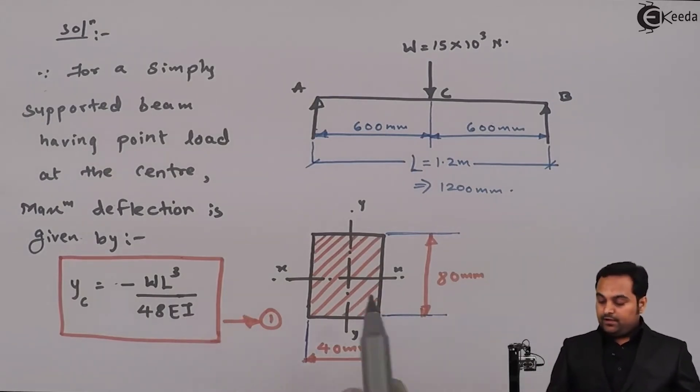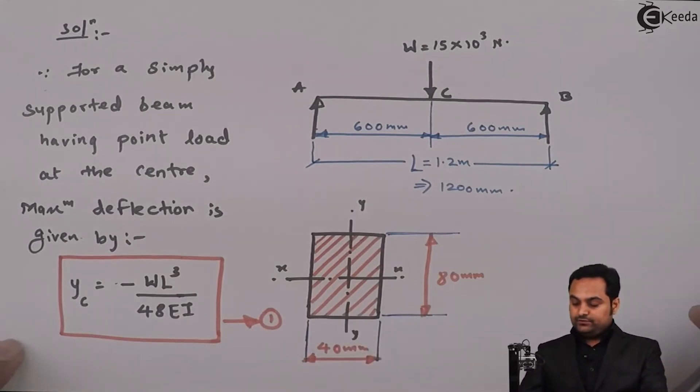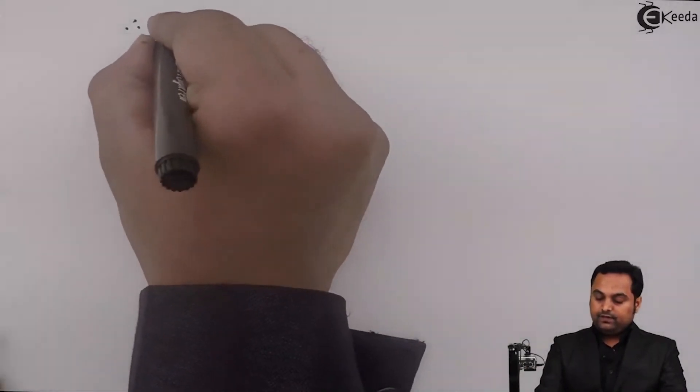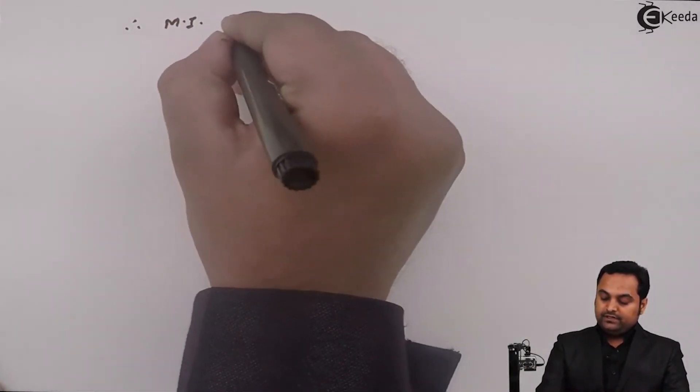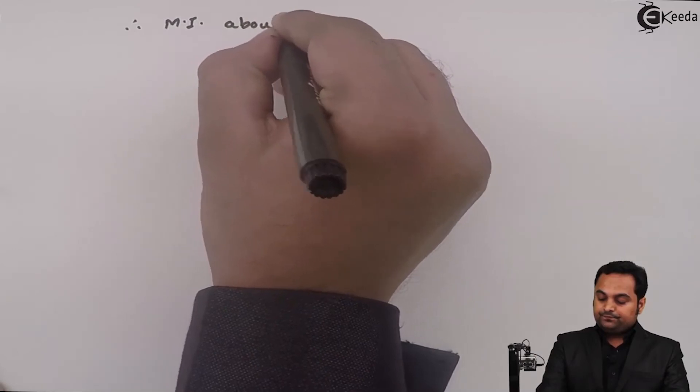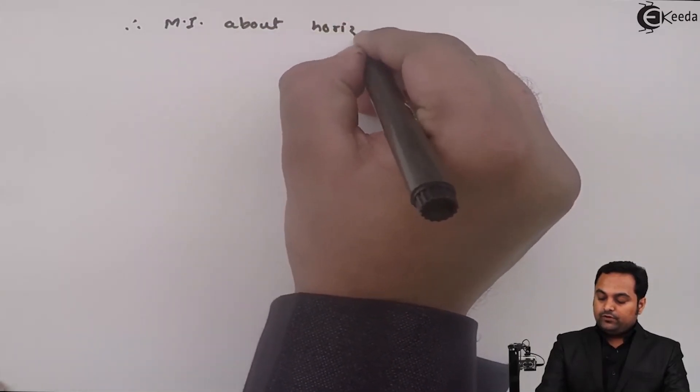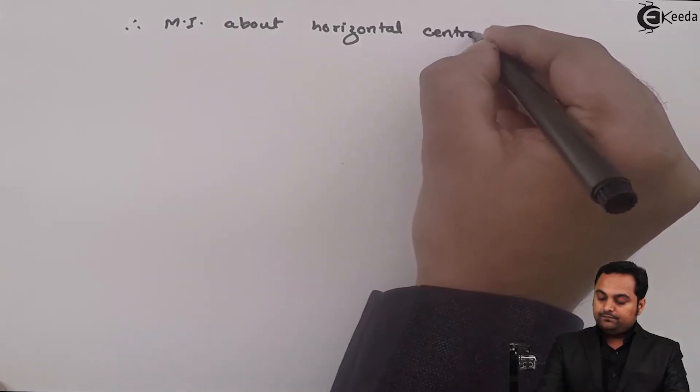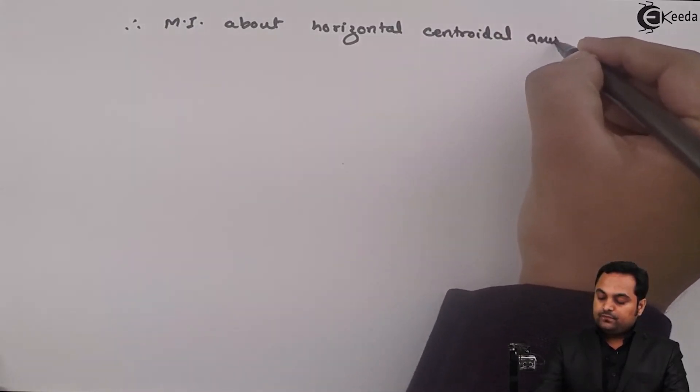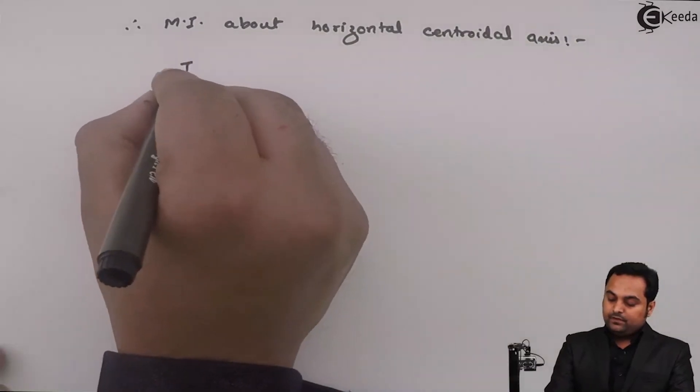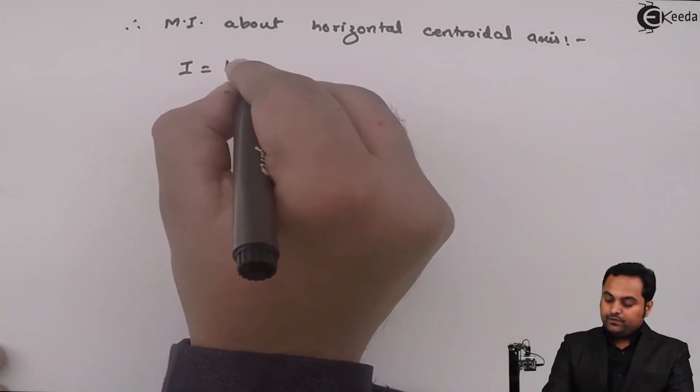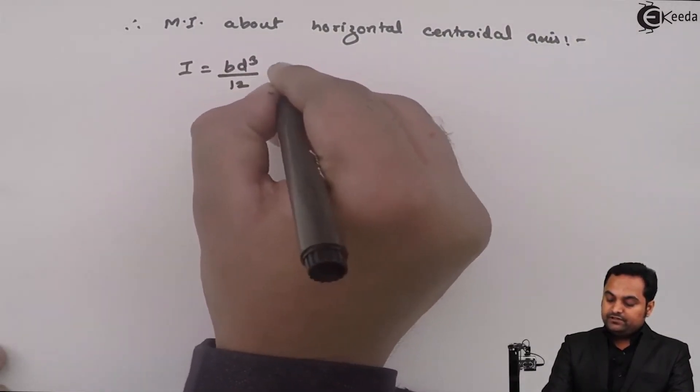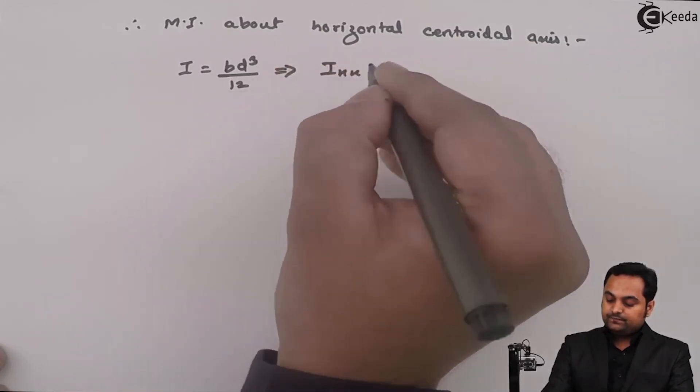So I is the moment of inertia about the horizontal axis. So I will write down, therefore, MI, that is moment of inertia about horizontal centroidal axis, it is given by I is equal to bd cube by 12, that is I_x.